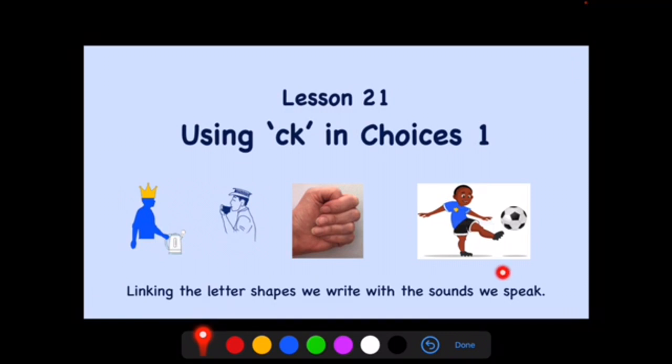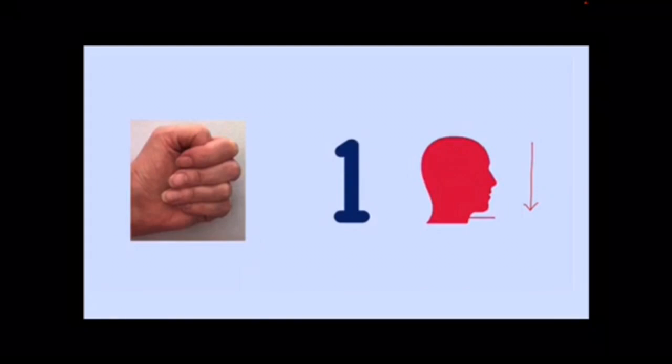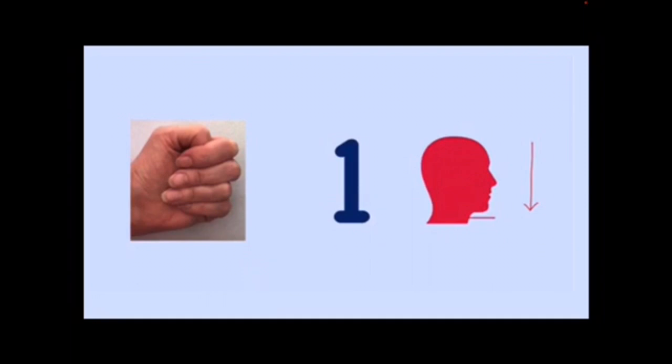Kick is one of the words we will be looking at and you can see the spelling choice C K. If it's in a word that is one syllable and has a short vowel sound, we will be using these four vowel sounds in this lesson. If our word has a short vowel sound and one syllable and we can hear K right at the end of that word we use the letters C and K.